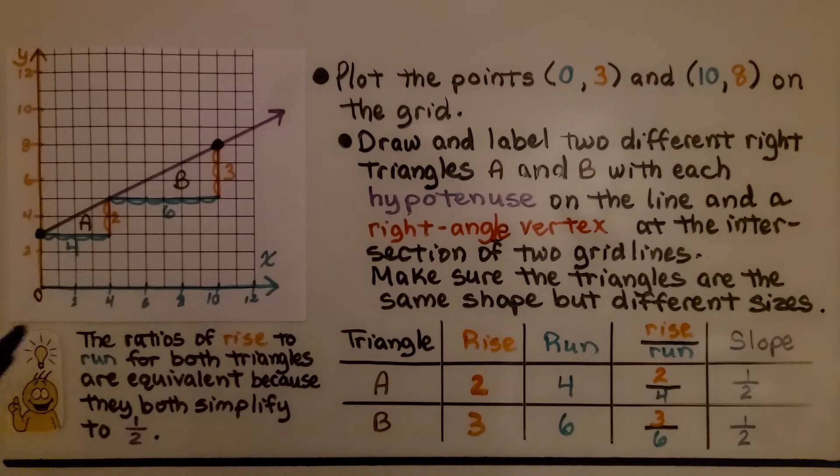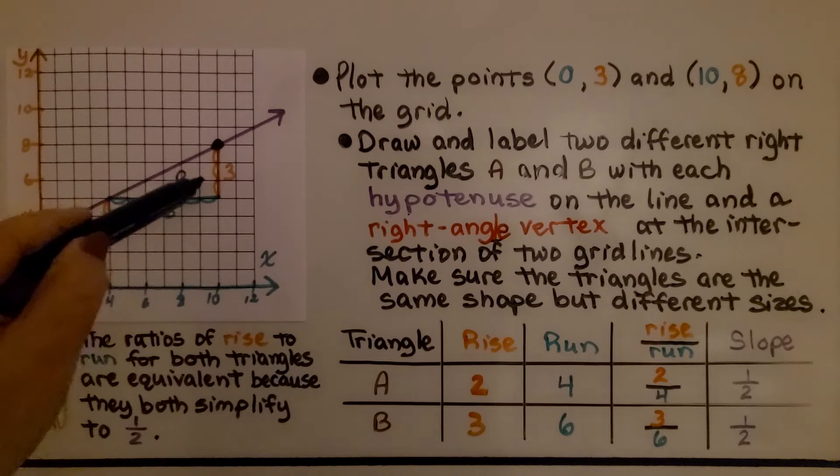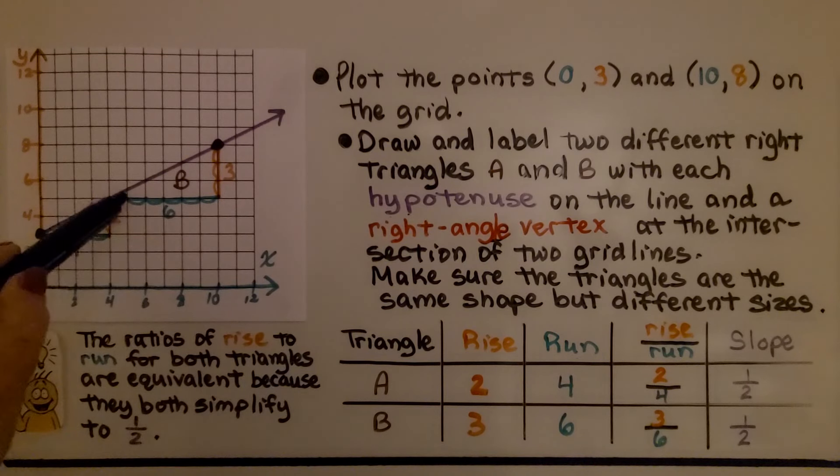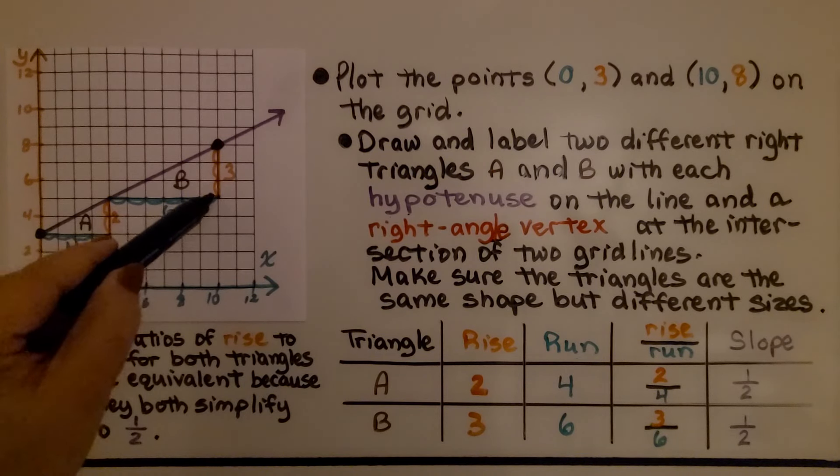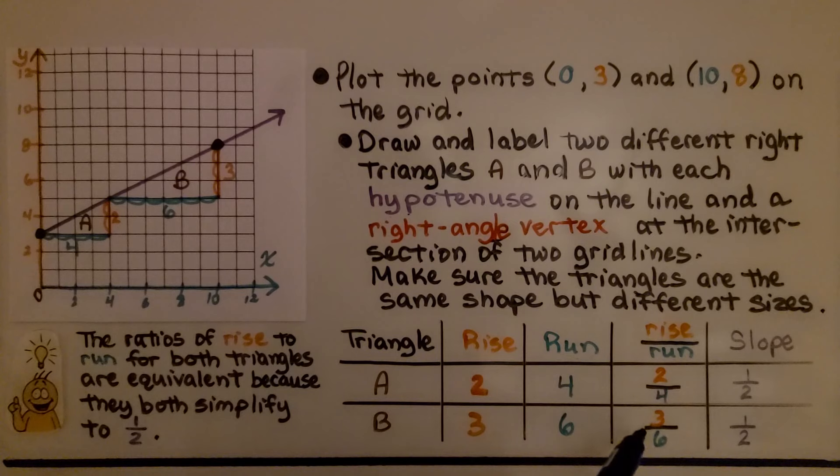For triangle B, our rise is 1, 2, 3 over 1, 2, 3, 4, 5, 6. The rise over run is 3, 6, which simplifies to 1 half.